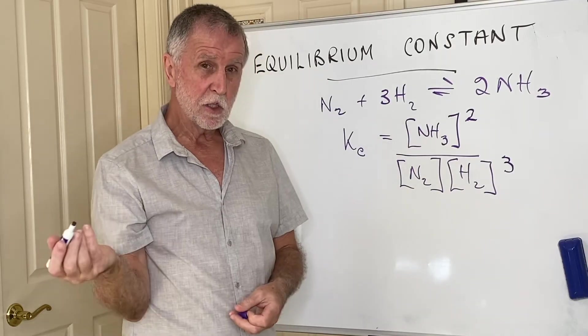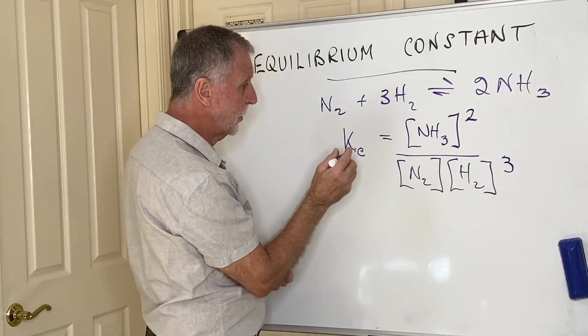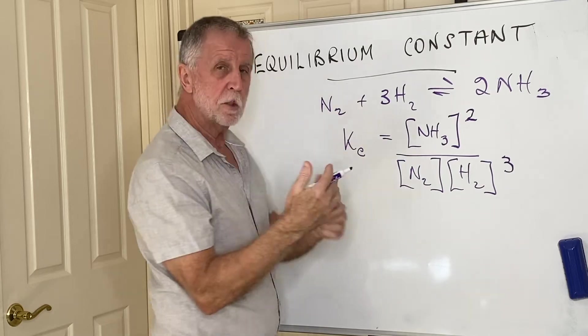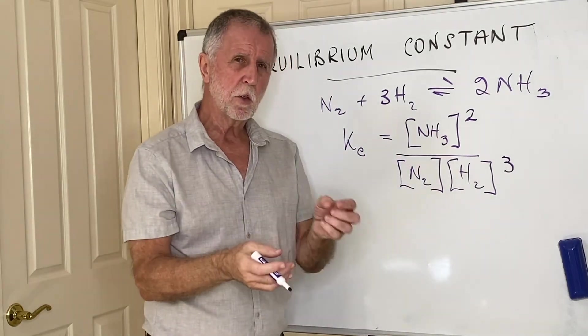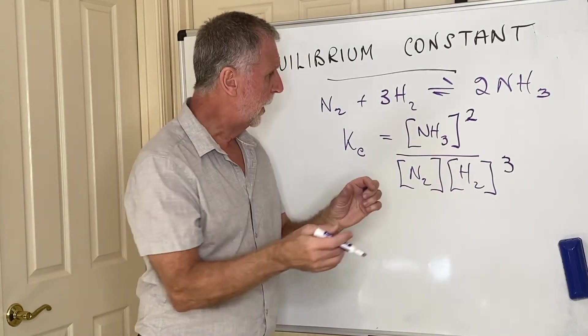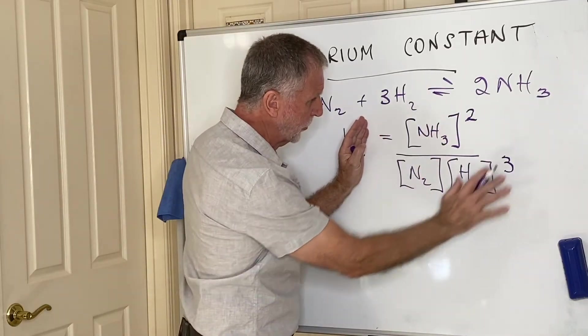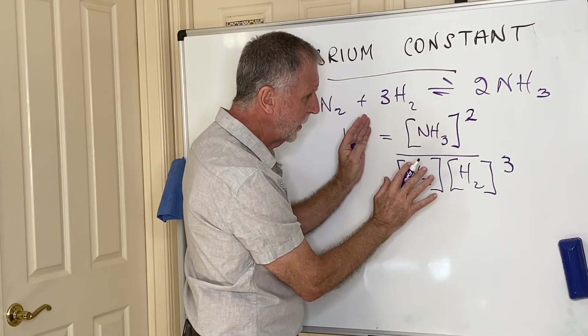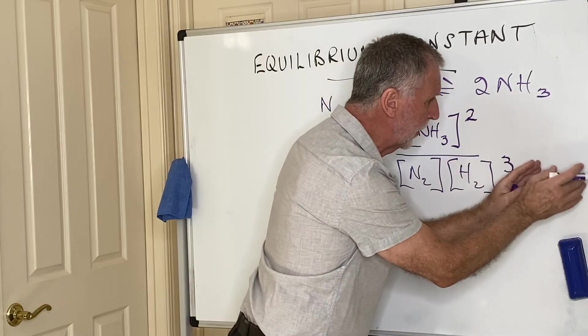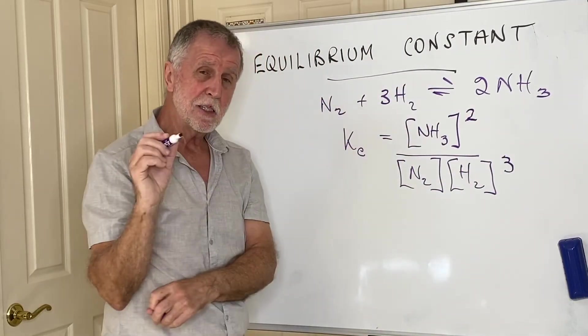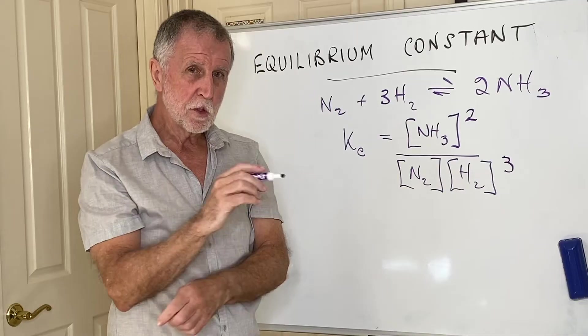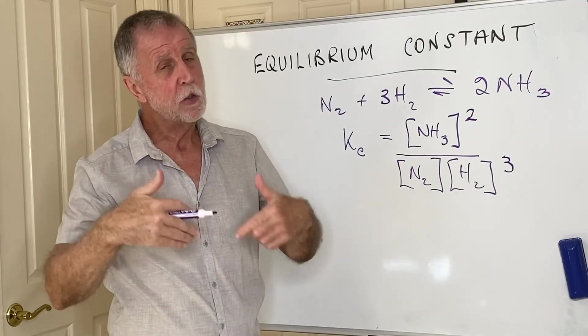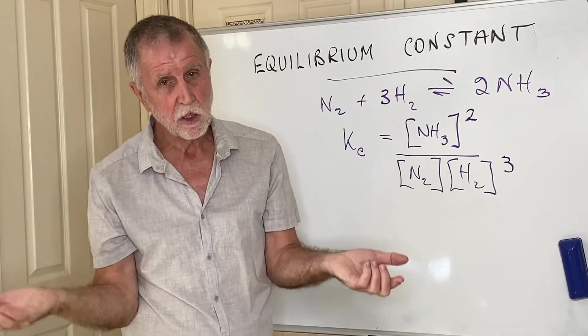Another question I've seen is where they ask you to, they give you some concentrations, they ask you to calculate something called the reaction quotient, which is effectively this expression, and then they ask you to compare that numerical value with a Kc value they will give you. And of course, if they are exactly the same, then you can conclude it's at equilibrium.